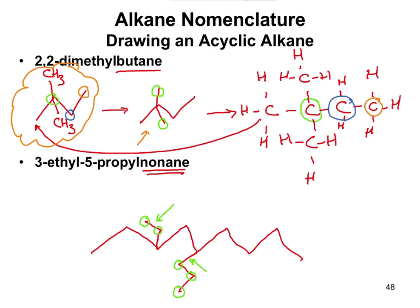It doesn't matter whether you draw a substituent pointing up or down. You'll also sometimes see substituents written in a hybrid format — for example, the ethyl written as 'CH2CH3' off a skeletal chain, and the propyl as 'CH2CH2CH3'. These mixed representations exist, so just be aware of them.